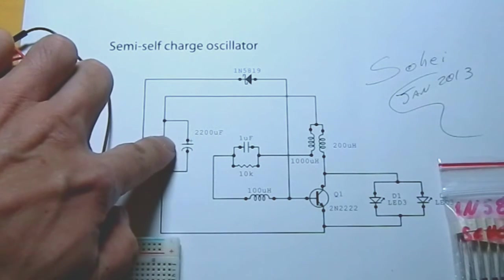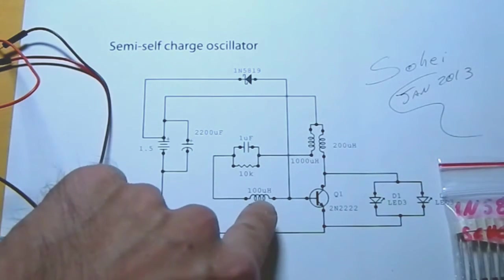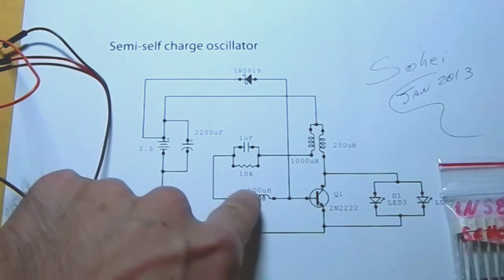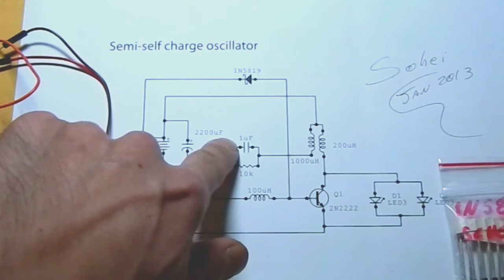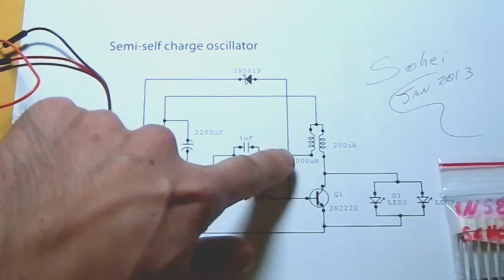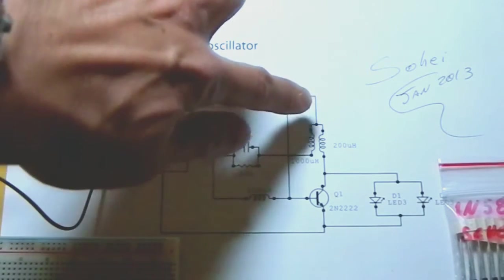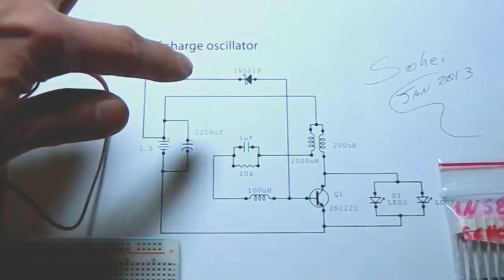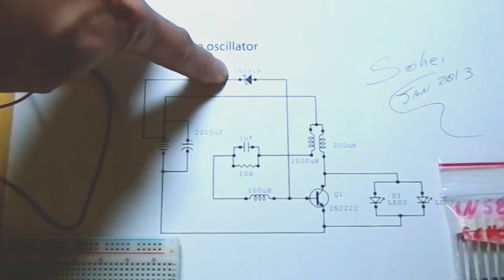2,200 microfarad capacitor. This inductor is 100 microhenry. A 10K resistor. 1 microfarad capacitor in here. One coil is 1000 microhenry. The other coil is 200 microhenry. And here is the Schottky diode.